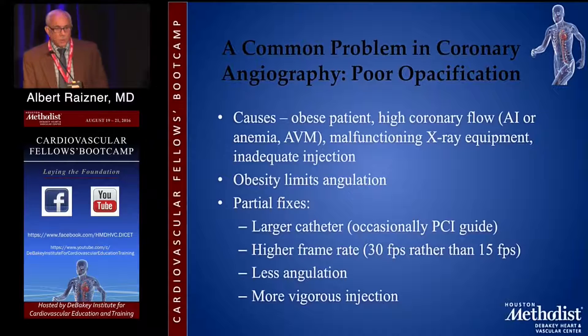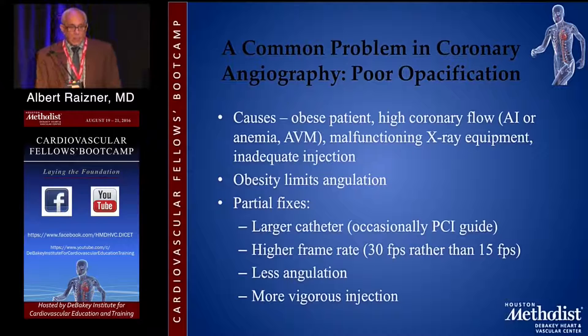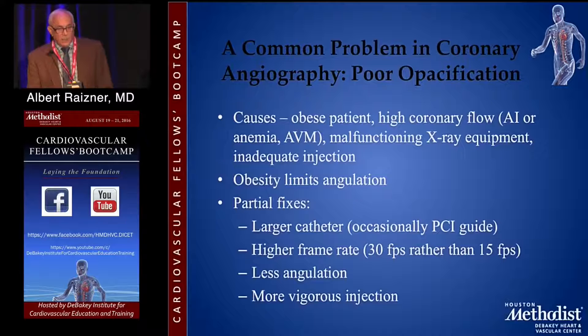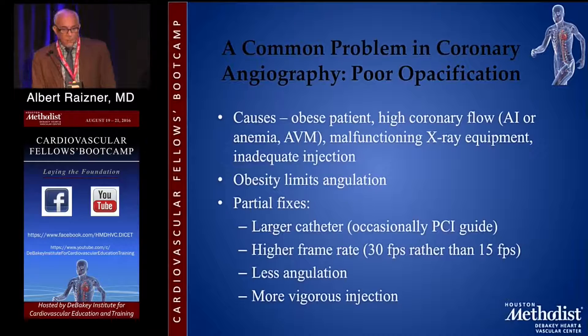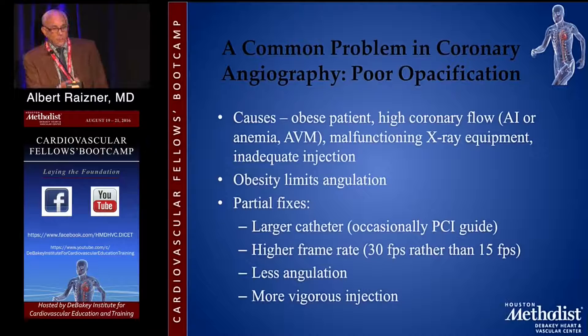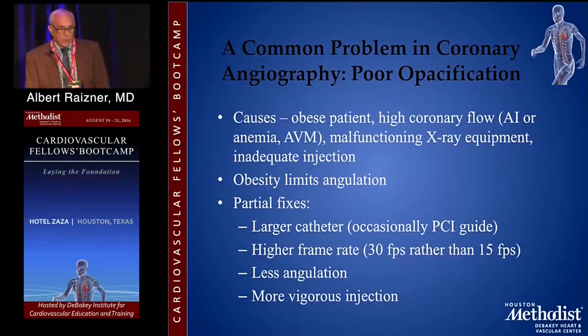Common problems are poor opacification. This is a problem in obese patients, in patients with high coronary flow, aortic valve disease, and anemia. Obesity remains a big issue and limits the angulation you can utilize. Partial fixes are almost always doable. One thing that's really helpful now is using larger bore catheters — we now have guiding catheters in almost every French size that give you better flow than diagnostic catheters. If you're unhappy with the angiographic appearance, change to the same French size but use an interventional guide, which will get you better flow.